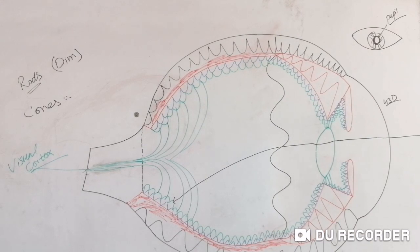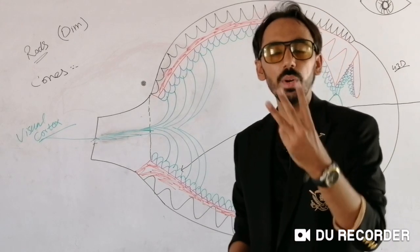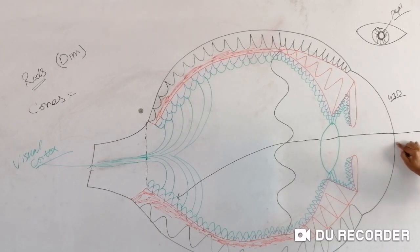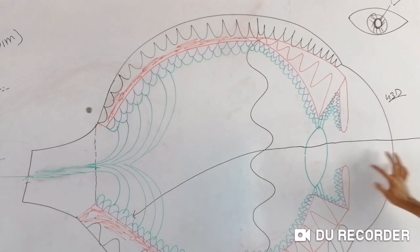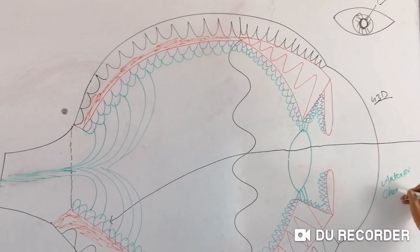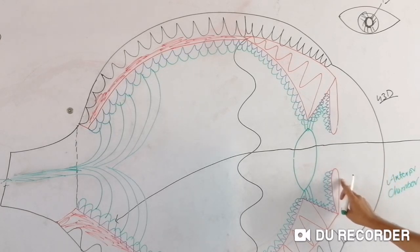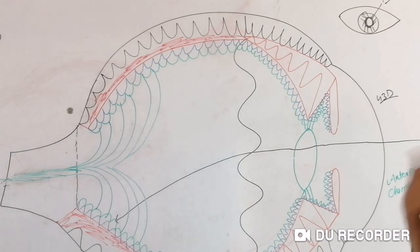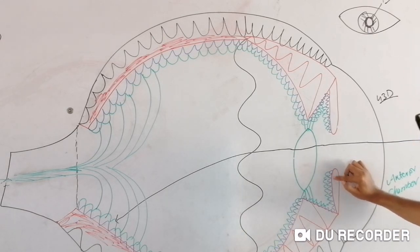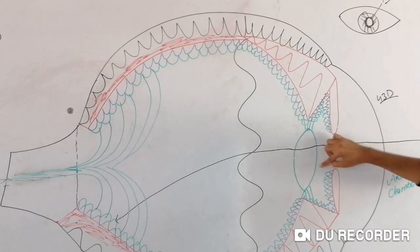We have now discussed all three layers introductionally. Now we will discuss the segments and chambers of the eyeball. There are three different chambers. The first chamber is from the cornea to the iris — the space between the posterior surface of the cornea and the anterior surface of the iris — called the anterior chamber. The second is the posterior chamber: the space between the posterior surface of the iris and the anterior surface of the lens.